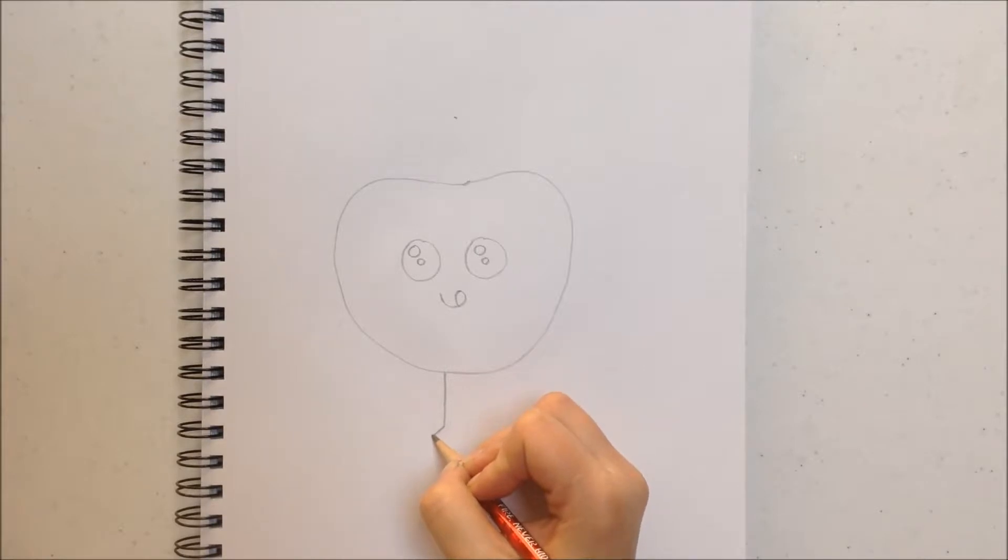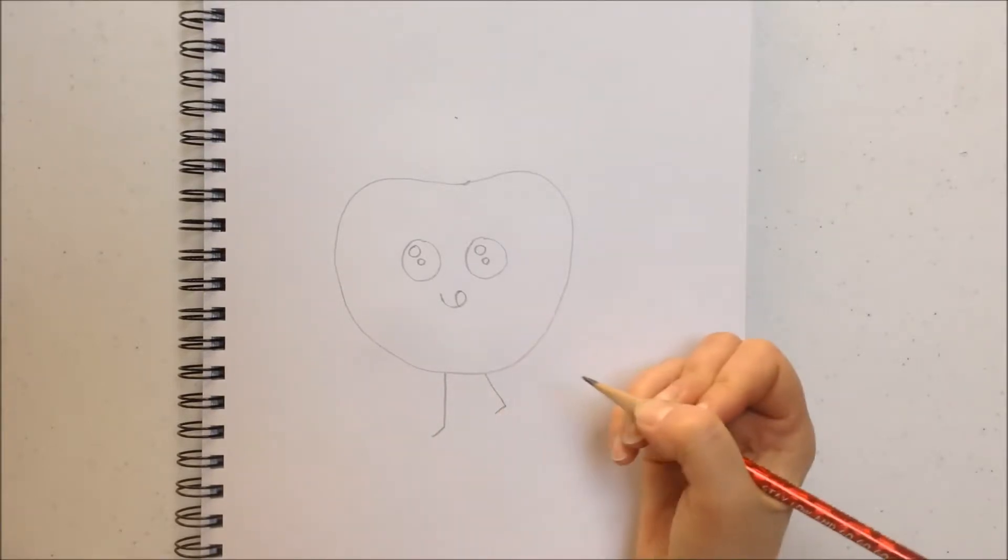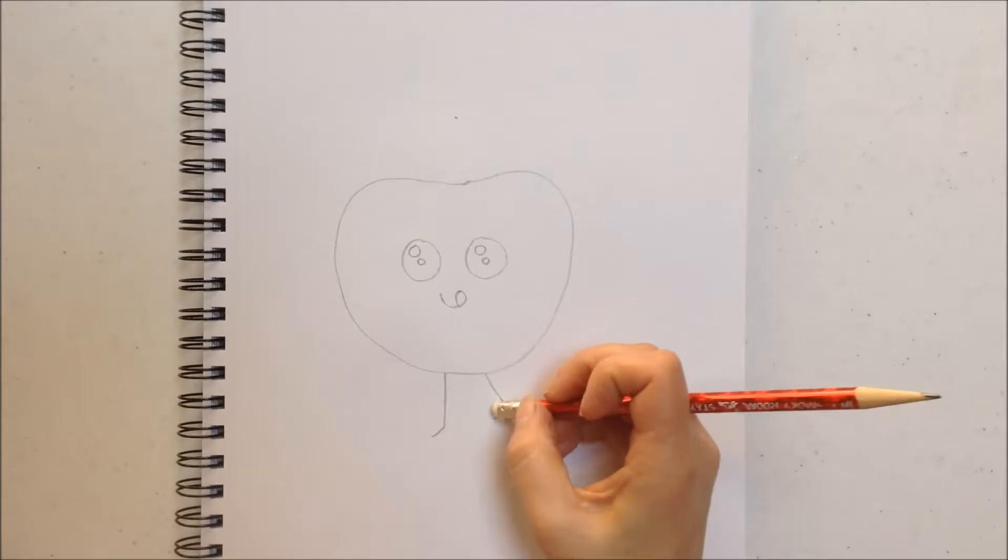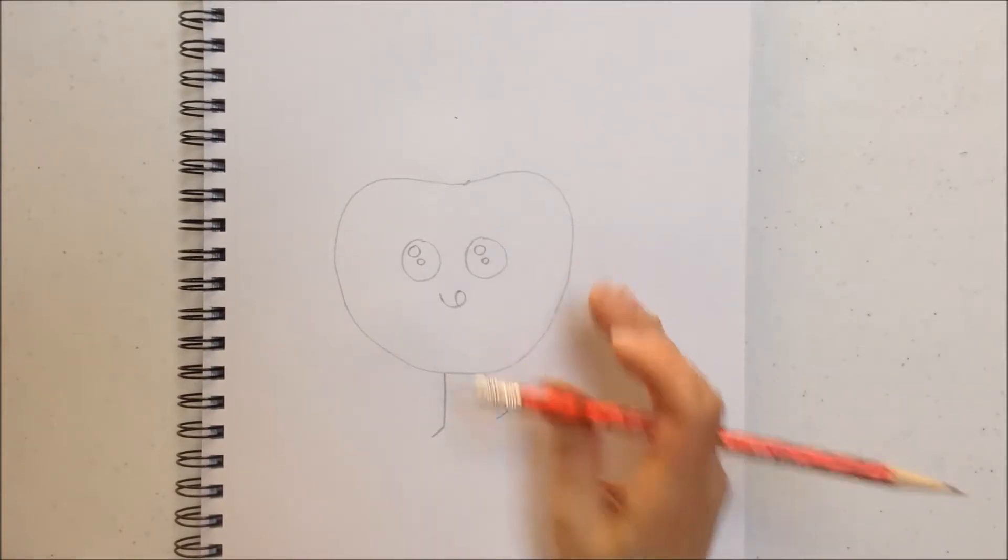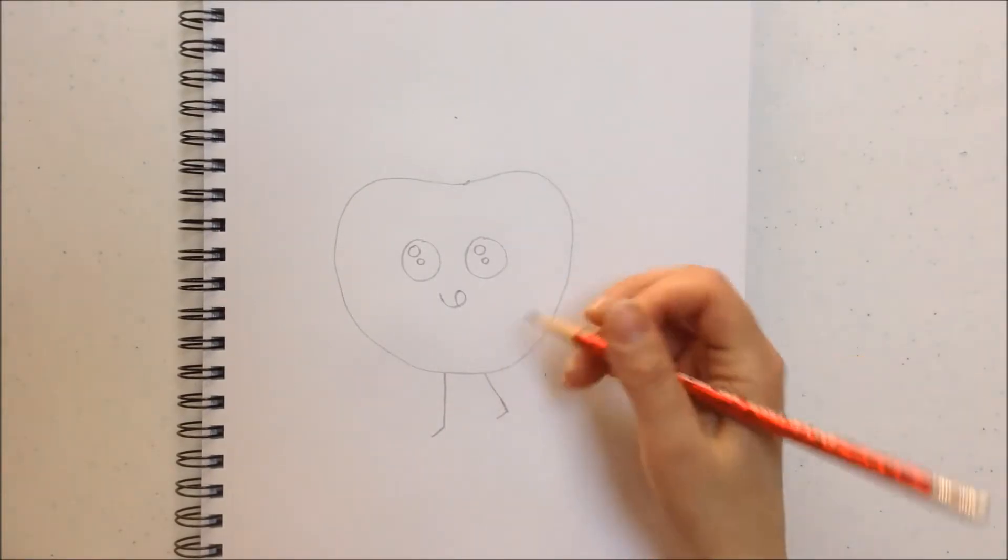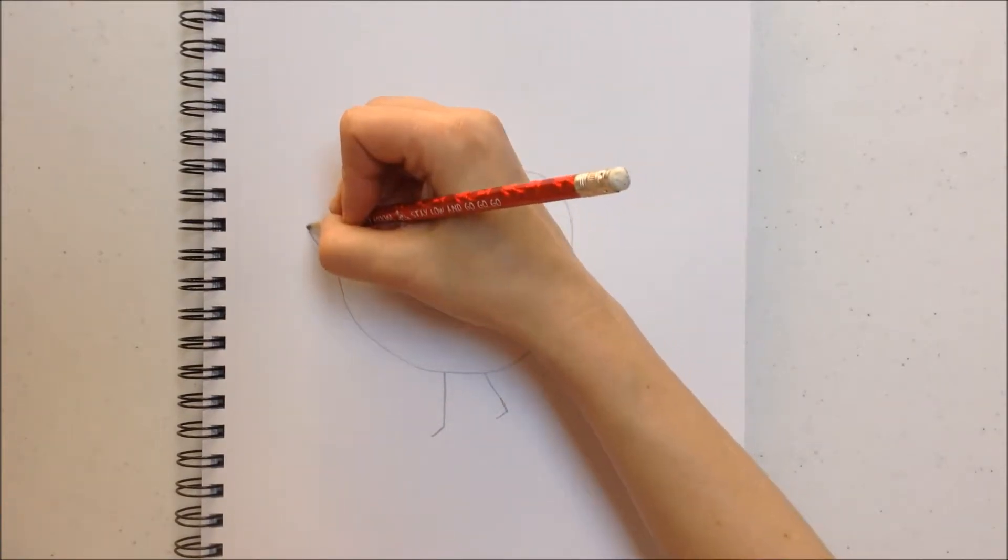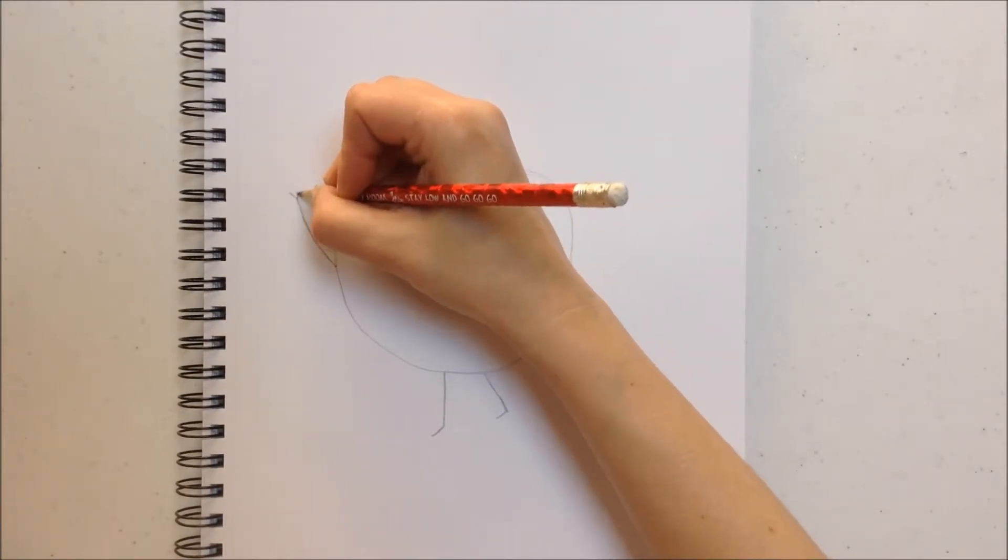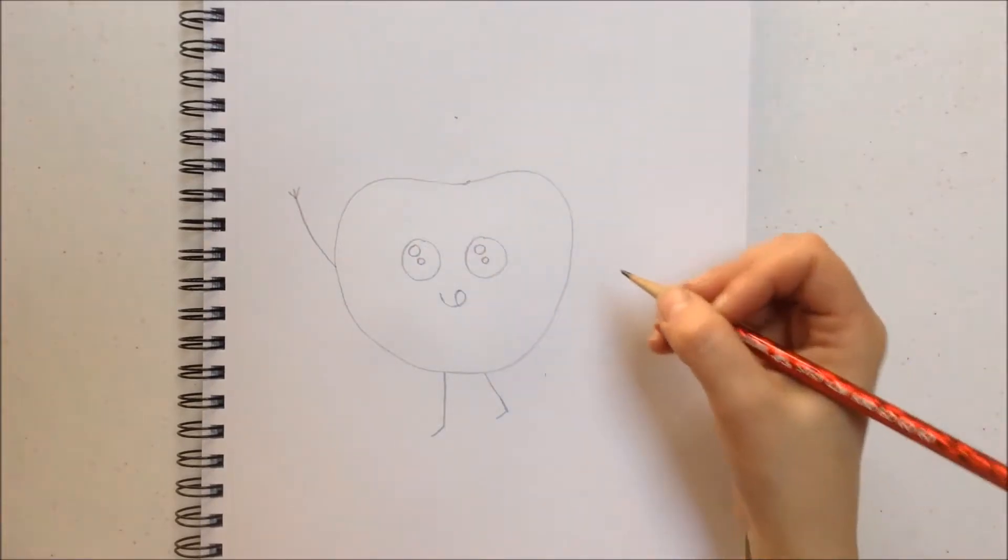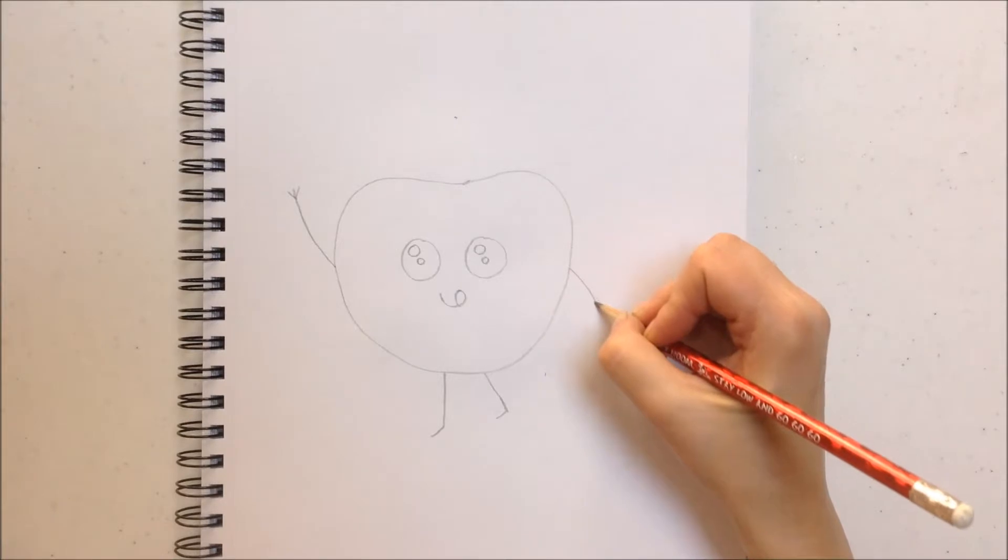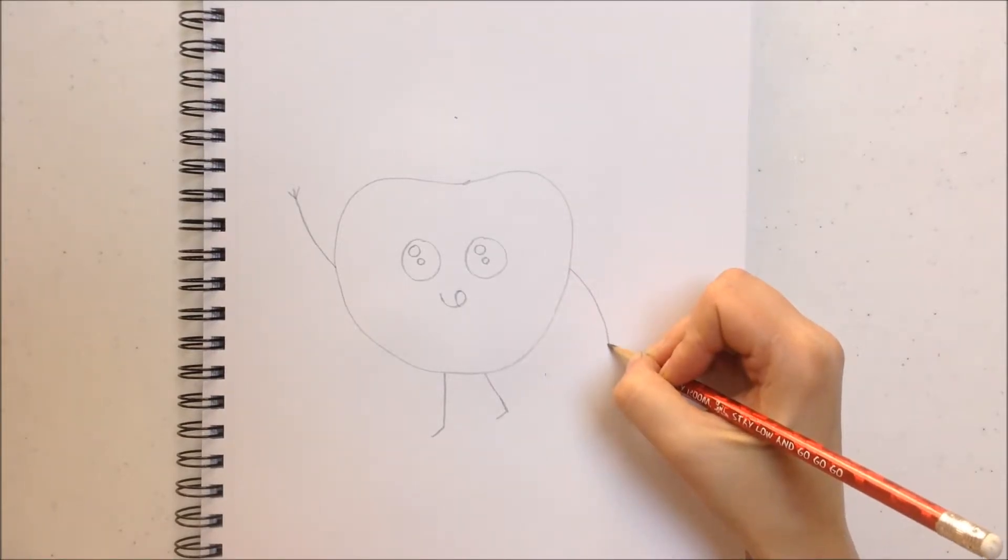Two legs, a line down and a little line diagonal so it looks like he's moving. And then one arm up in the air with three little fingers and then we're going to make the other one go down with three little fingers, kind of like he's in a dancing pose.